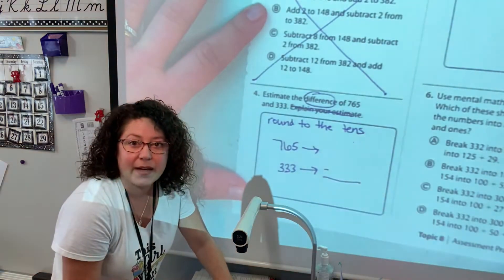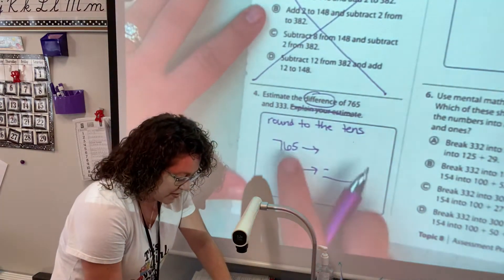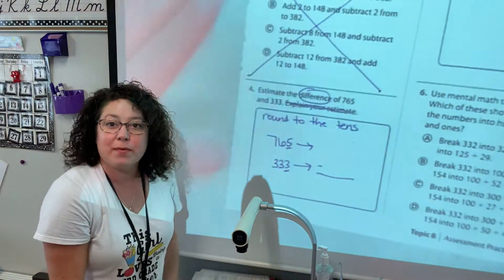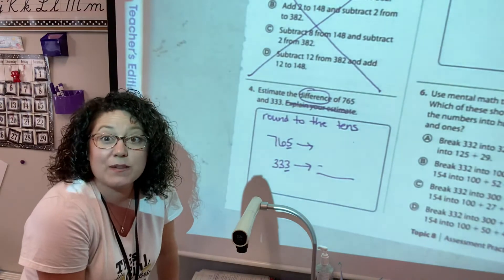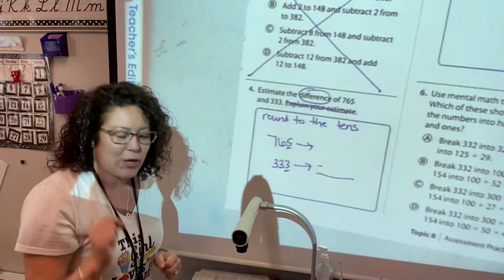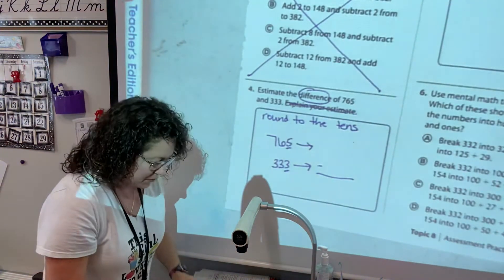And remember when you're rounding to the tens, you look at the ones and you remember our tricks: one two three four hit the floor, stays the same; five six seven eight nine climb the vine, goes up one, okay.